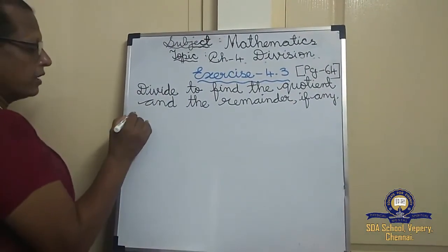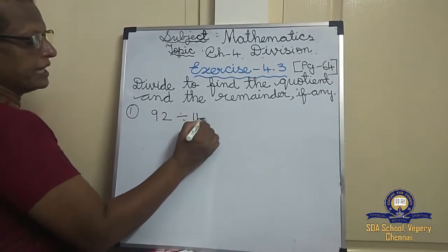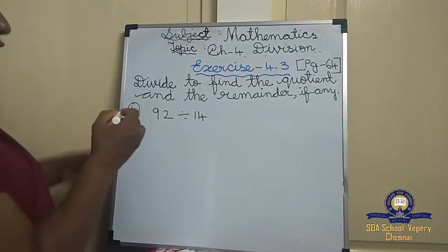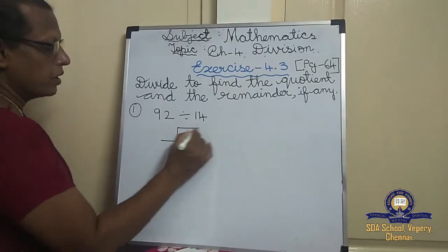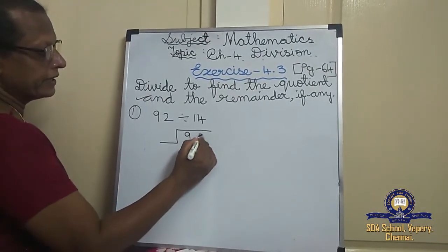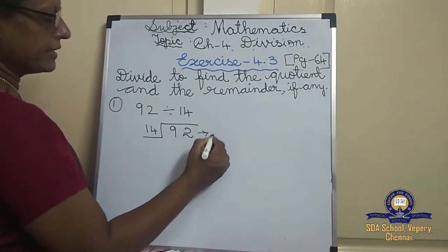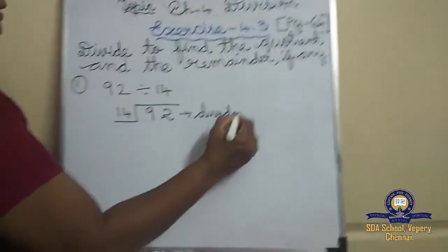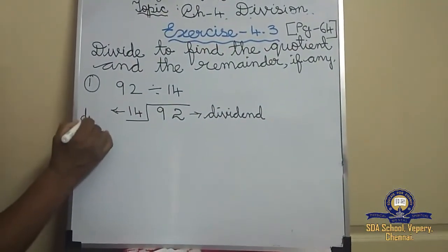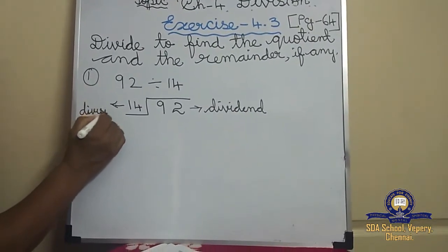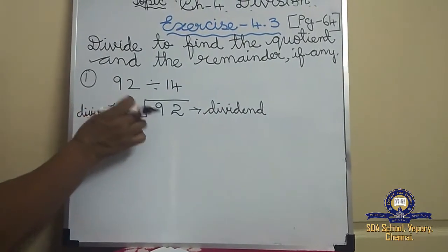The first sum: 92 divided by 14. So, 92 divided by 14 — 92 is the dividend and 14 is the divisor. Don't forget: the dividend should be inside and the divisor should be outside.